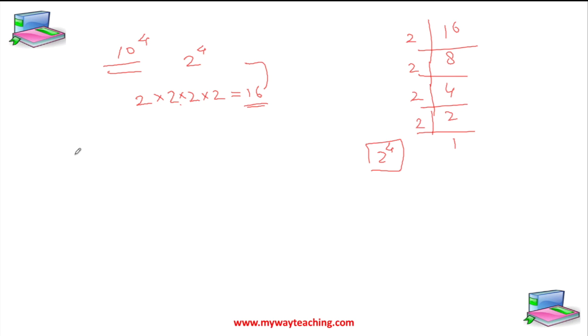If we say 10 raised to power 3, that means 10 is multiplied 3 times. 10 into 10 into 10 equals 1,000, or you can say 10 to the 3. If we say 3 raised to power 3,